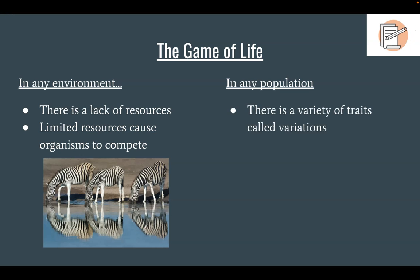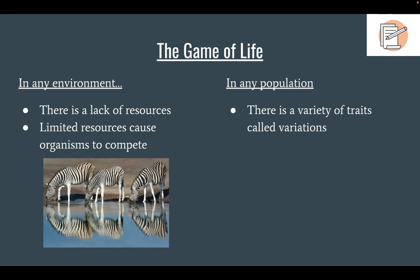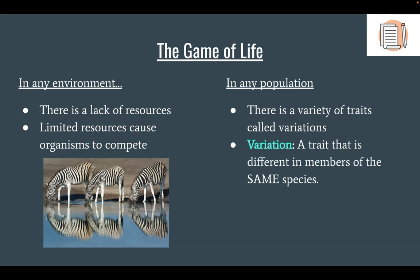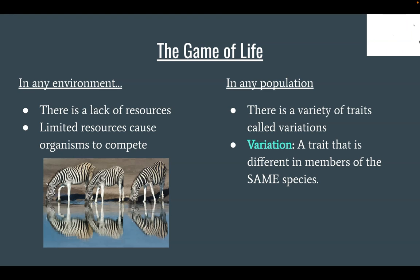However, in a population, not all the organisms are the same. There's a variety of traits — all the organisms are slightly different. We call this variety of traits variations. A variation is a trait that is different in members of the same species. You'll notice the three zebra on the left look very similar, but they're slightly different. Those are variations.